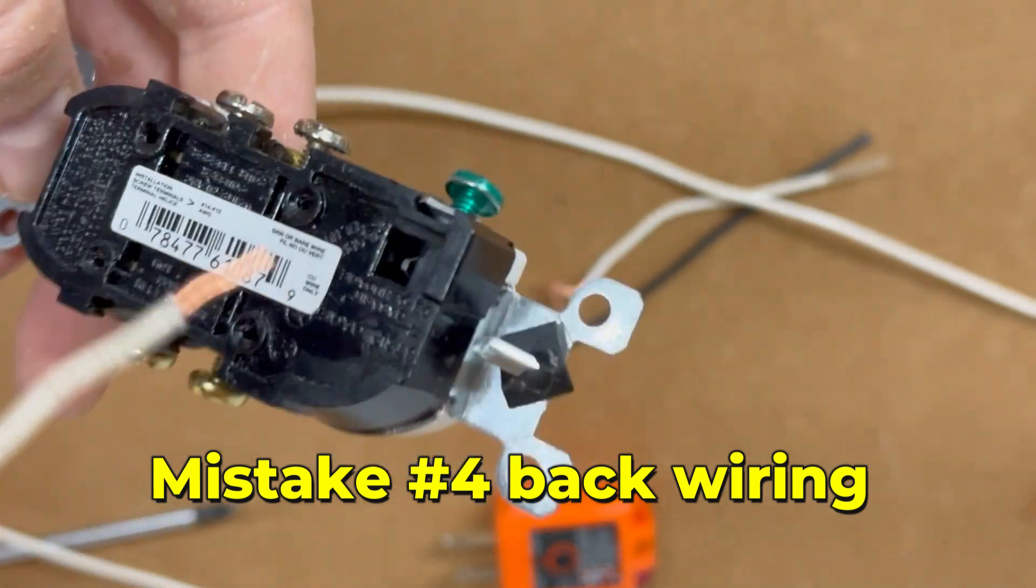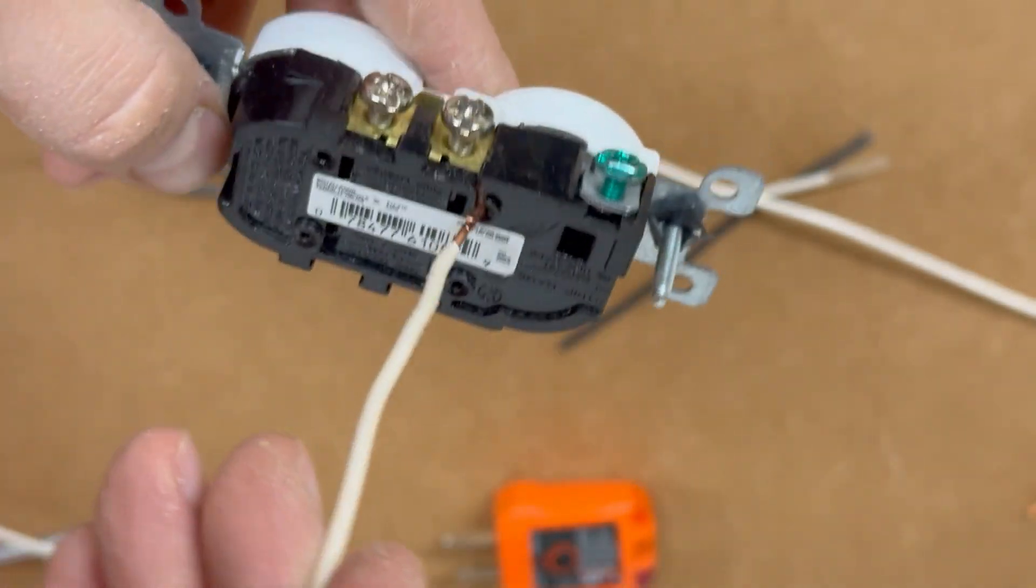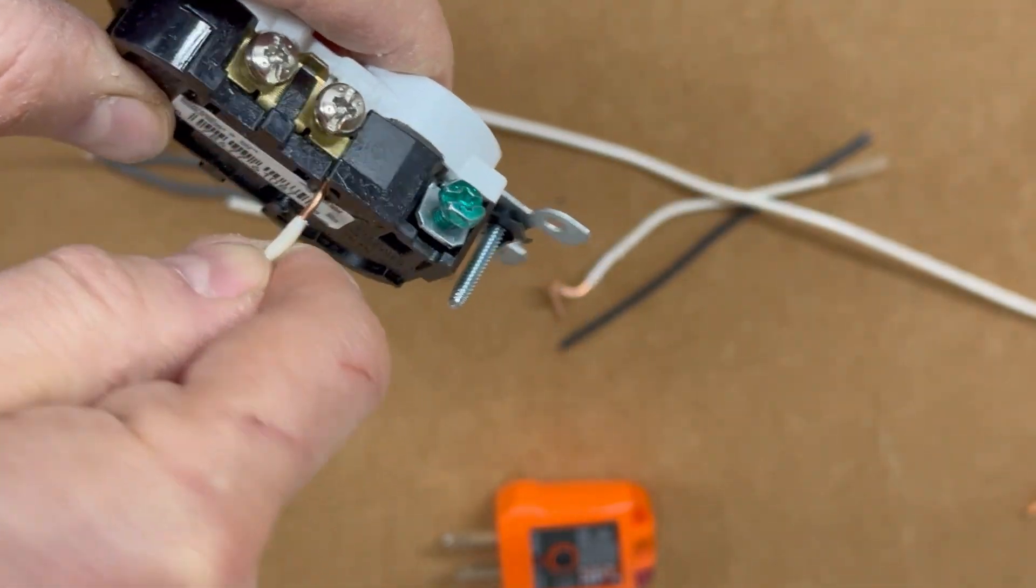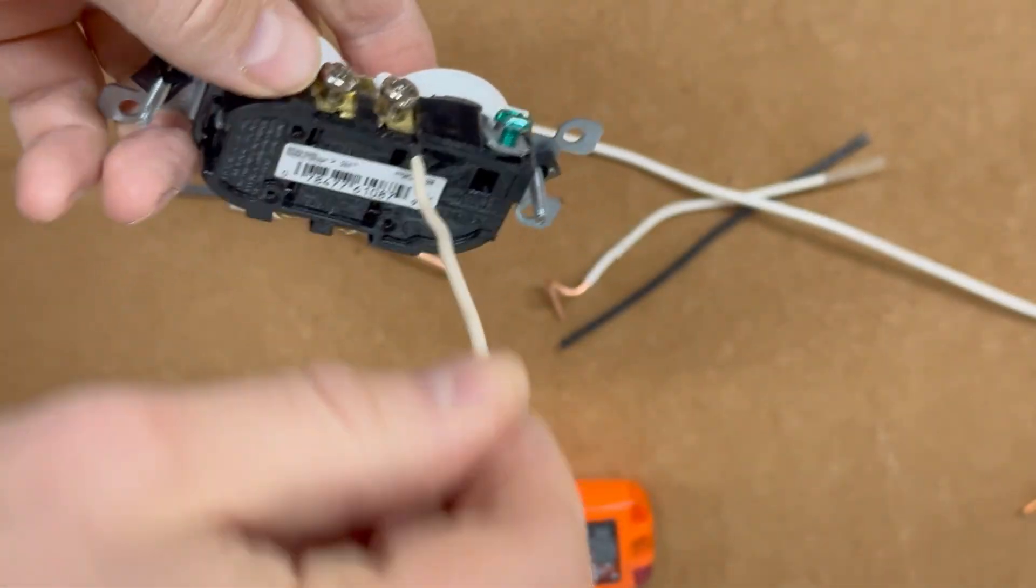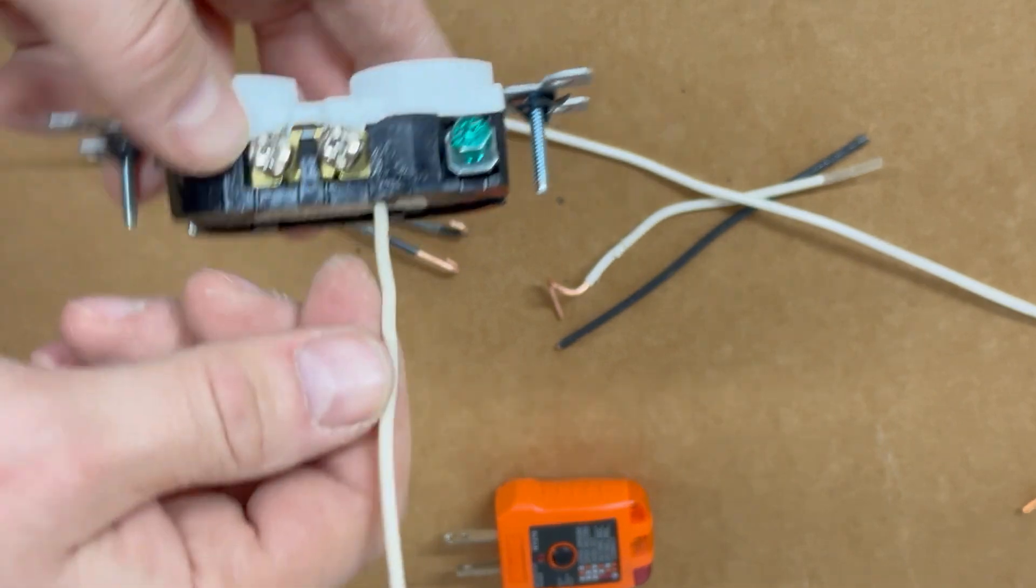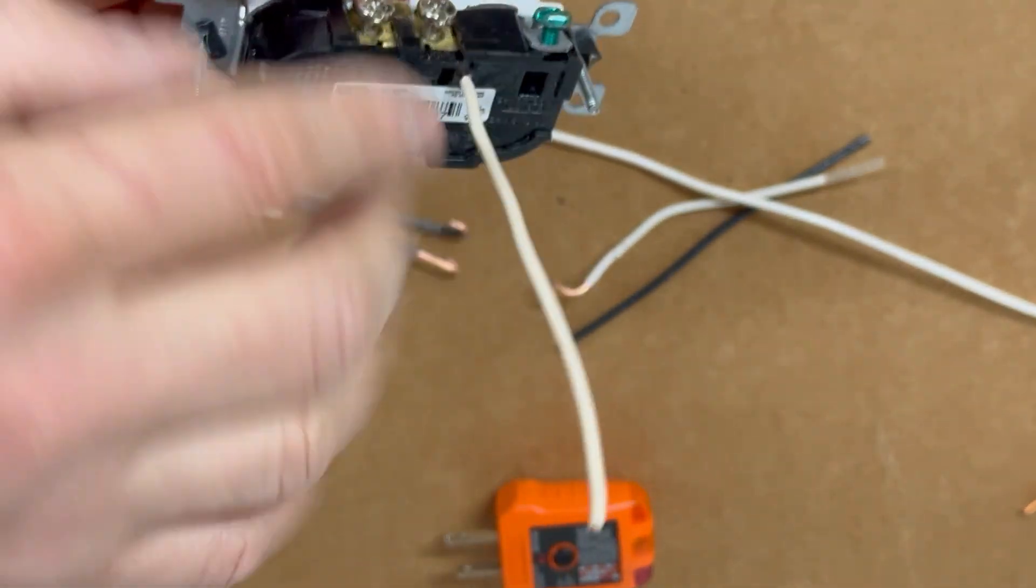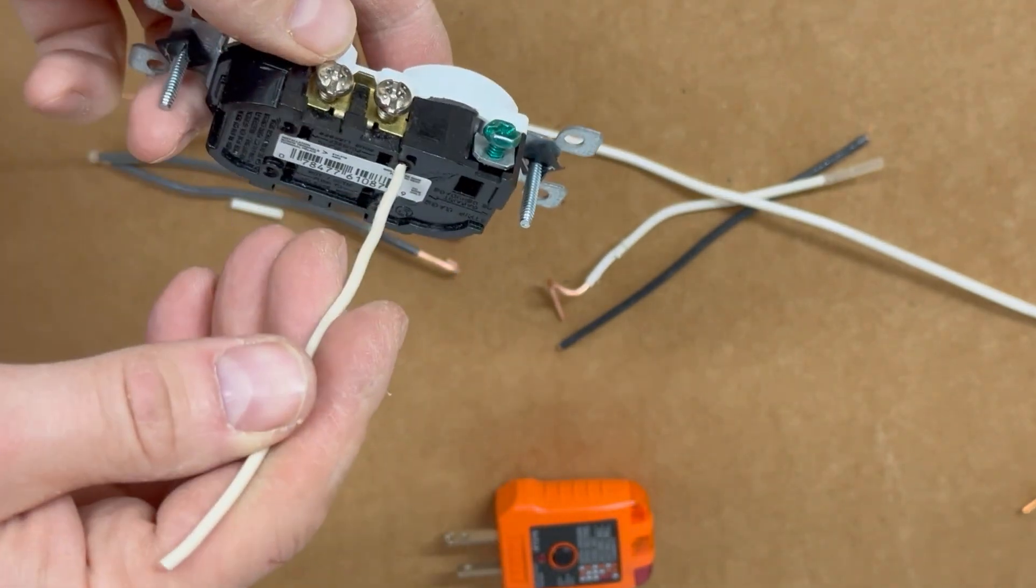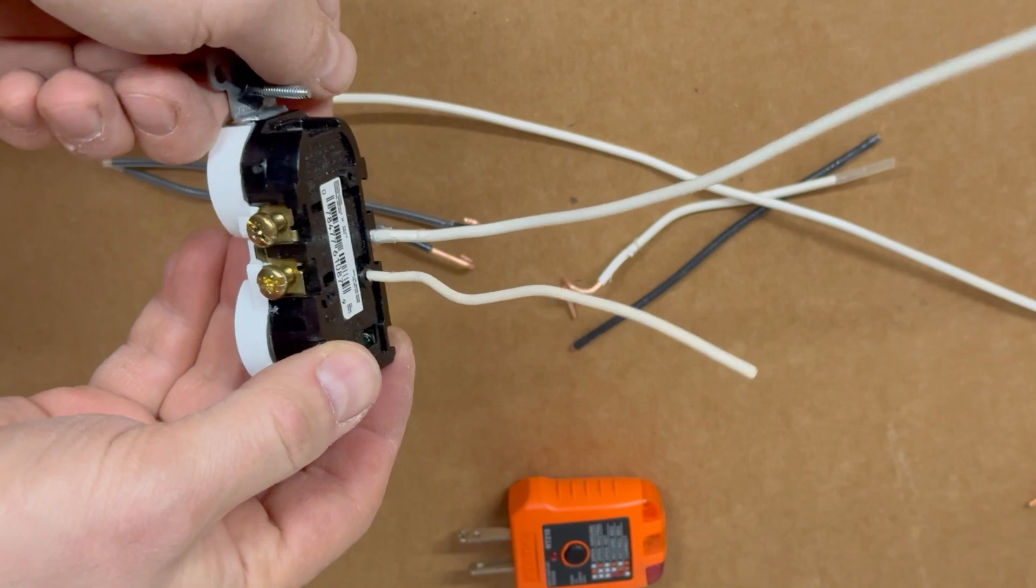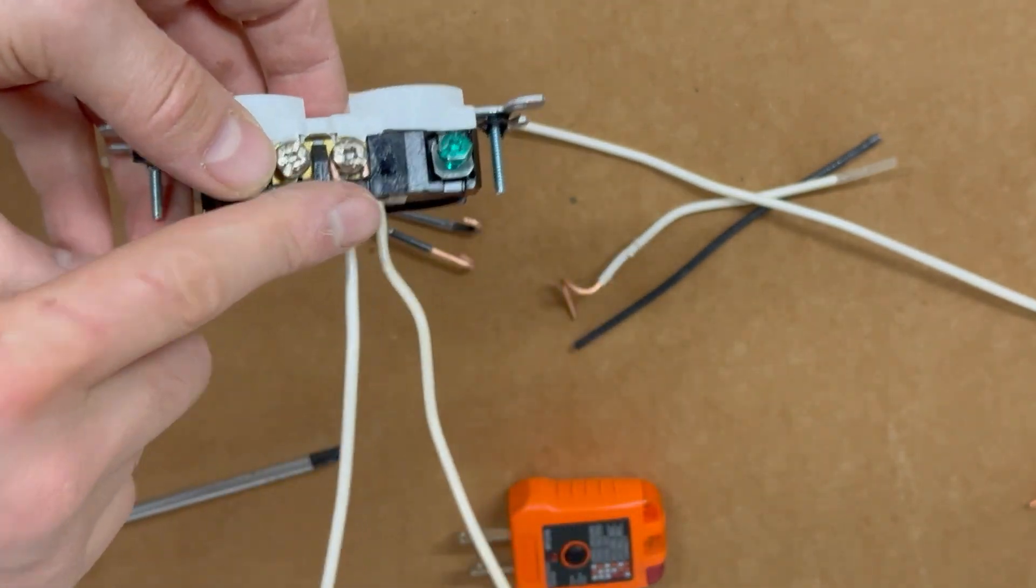Mistake number four: backstab wiring holes. Many 15-amp outlets come with small holes in the back designed for connecting wires. You just need to strip the wire and insert it into these holes for an instant connection. However, you should never use this type of connection. While it may seem convenient, it doesn't provide a reliable or durable connection. The wire inside the outlet doesn't make significant contact with the metal, especially for heavy-duty use.